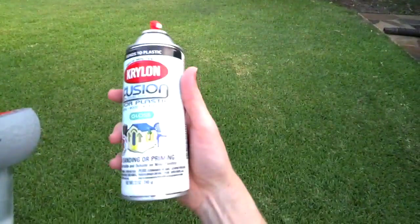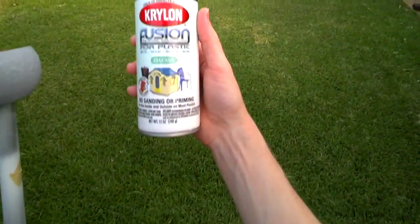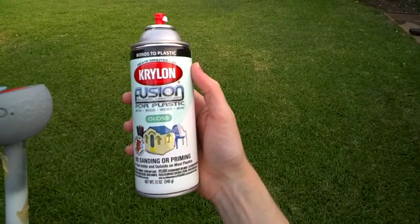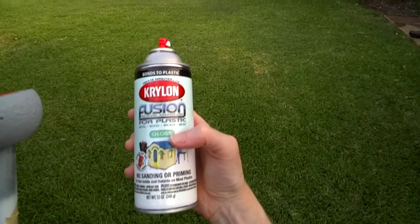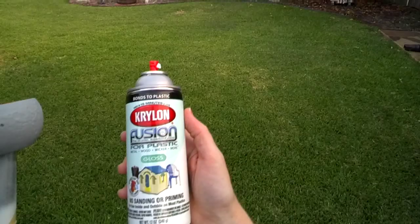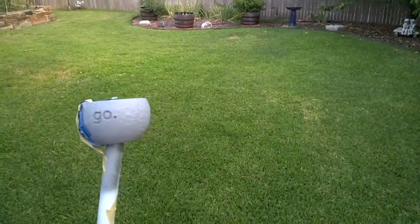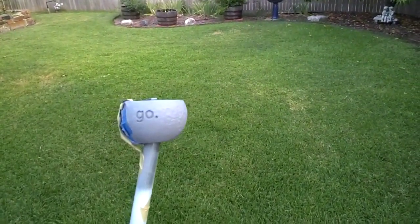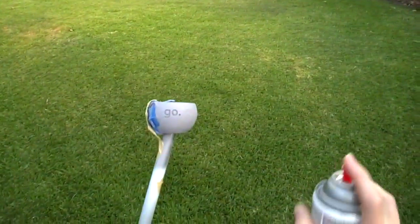So I'm going to do a quick layer of this Krylon Fusion for plastic. This is white and it's gloss. That'll be important later because I'm going to try to make this nice and shiny as just one way of doing it. So let's go ahead and see how this works.